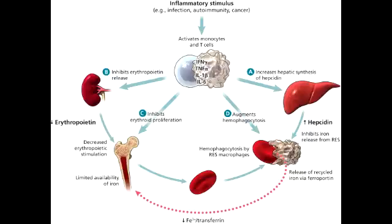Anemia of chronic disease occurs in patients with chronic illness and inflammation. What ends up happening is there is an upregulation of hepcidin, a protein released by the liver. Its job is to bind ferroportin on intestinal mucosal cells and macrophages, thus inhibiting iron transport and decreasing the release of iron from the macrophages.